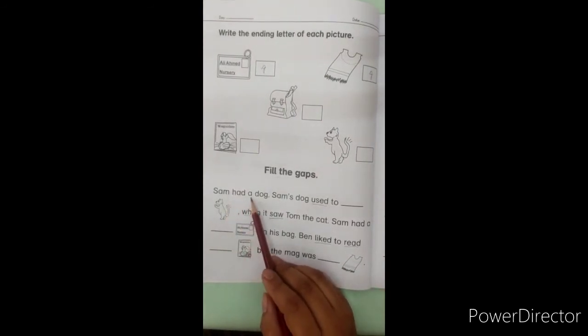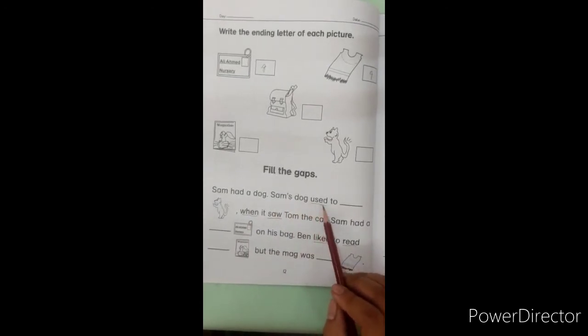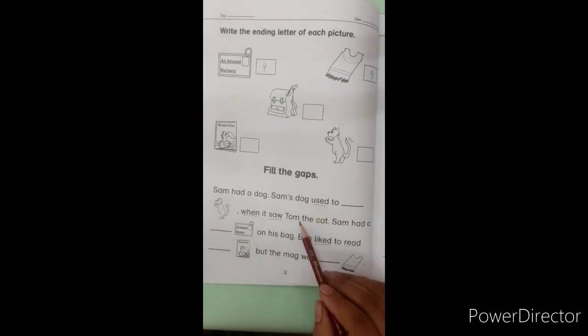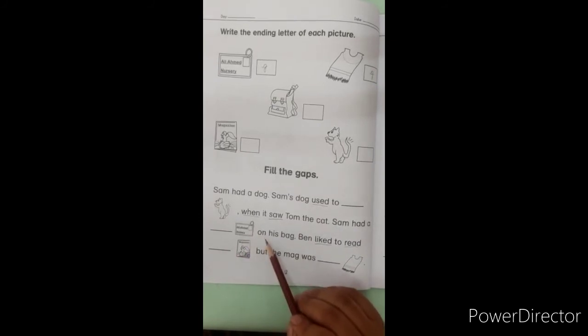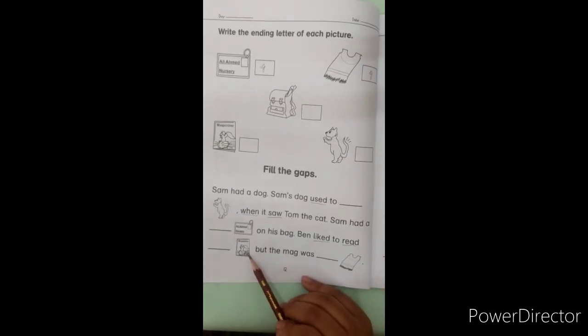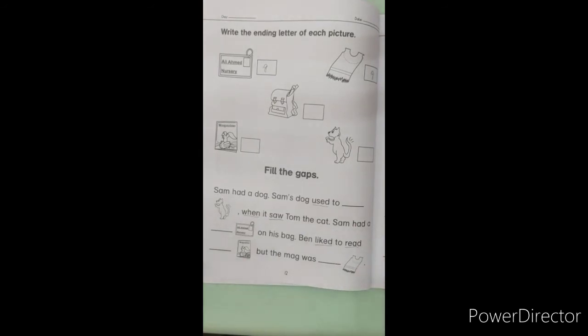Sam had a dog. Sam's dog used to wag. When it saw Tom the cat, Sam had a tag on his bag. Ben liked to read mag. But the mag was rag.